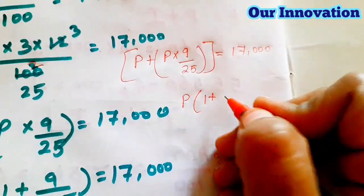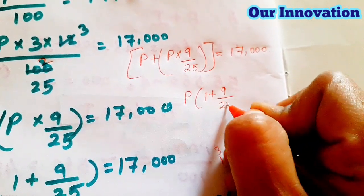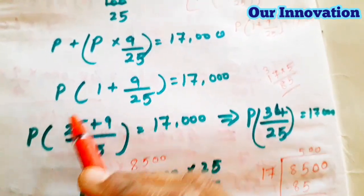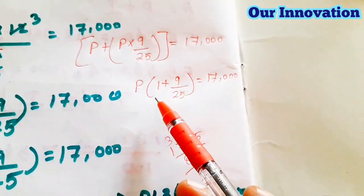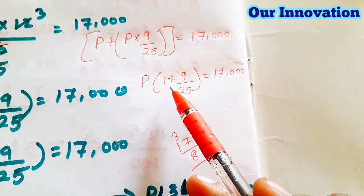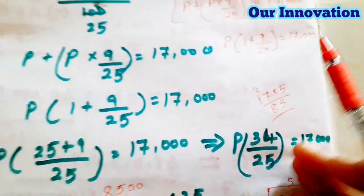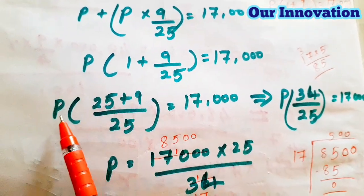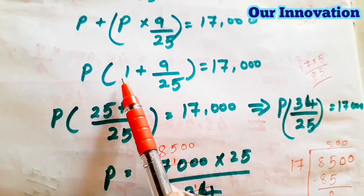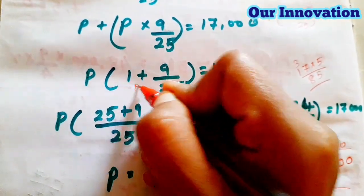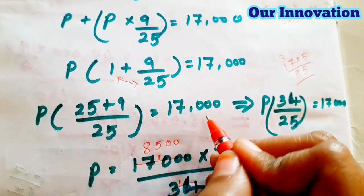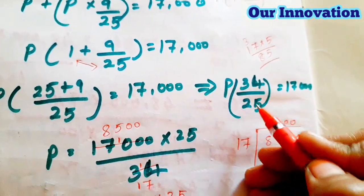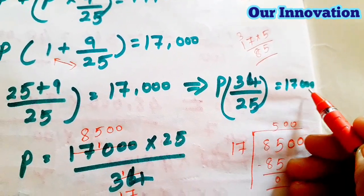So P(1 + 9/25) = 17,000. Converting to a single fraction: 1 × 25 = 25, so P × (25 + 9)/25 = 17,000. Therefore P × 34/25 = 17,000. Moving 34/25 to the right-hand side.